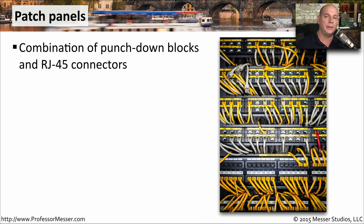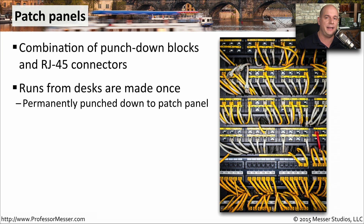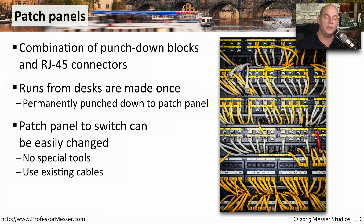If you're in a relatively large environment, you're probably using patch panels. It's very common to see patch panels that might have punchdown blocks, or a combination of a punchdown on one side and an RJ45 on another. Patch panels make things much easier when you're in the data center. You usually have a single run from a person's desk to the backside of a patch panel. Those wires are punched down permanently and will rarely move once in place. On the switch side of the patch panel, you may need to disconnect and reconnect people to different devices. The patch panel makes it very easy to make quick connections between devices on the floor and devices inside your data center — all without changing any wiring between the data center and the end user.